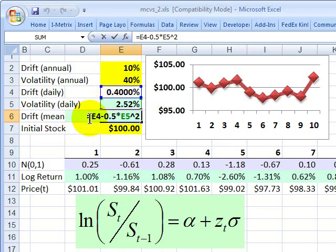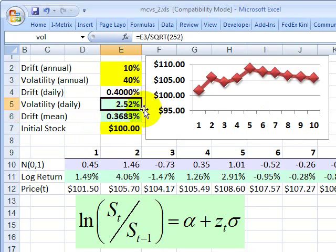But for now, without going into detail of that, let's just note that the daily drift is experiencing some drag as a function of the variance. And we end up with the two things we really need to model the Brownian motion, which is a daily volatility and a daily drift.